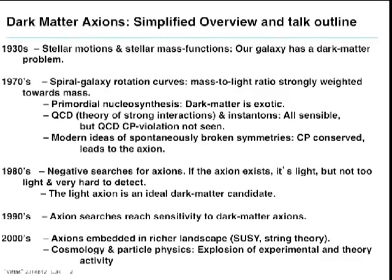The conclusion from that is: the axion exists, it's light, but as we saw it can't be too light, and therefore it's very hard to detect. It makes a neutrino look like a strongly interacting particle. The axion is therefore an ideal dark matter candidate given its production mechanism, given how weakly it interacts, given it has gravitational interactions.